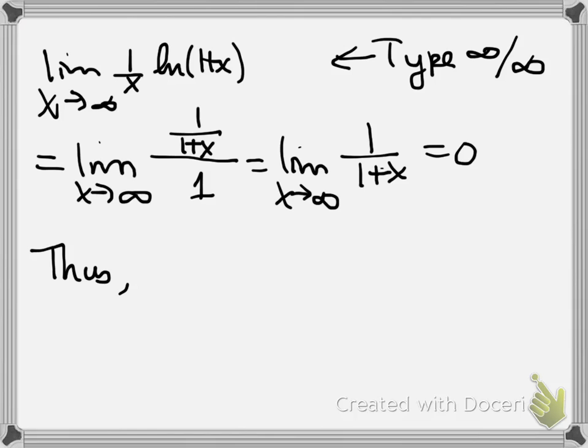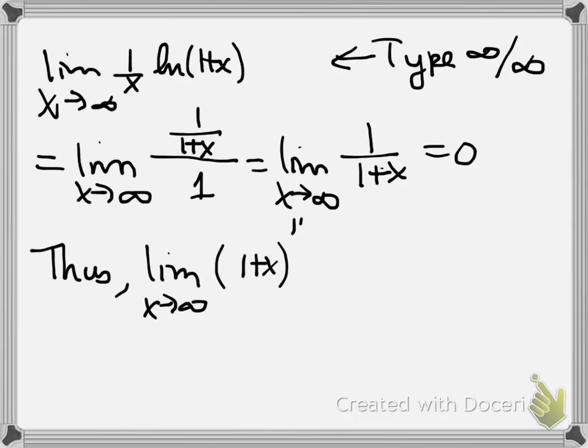And so our conclusion is that the limit as x goes to infinity of (1 + x) to the 1 over x, the thing we started with, equals the limit as x goes to infinity of e to the (1 over x times natural log of 1 plus x). We said that exponent's limit is 0, so the whole limit is e to the 0, which is better known as 1.